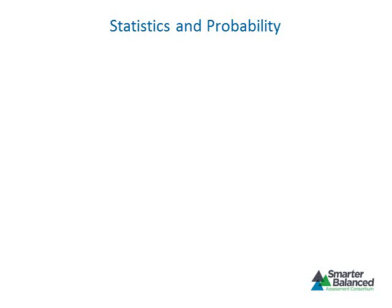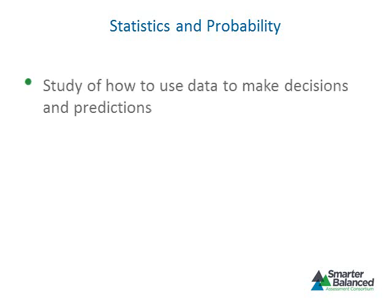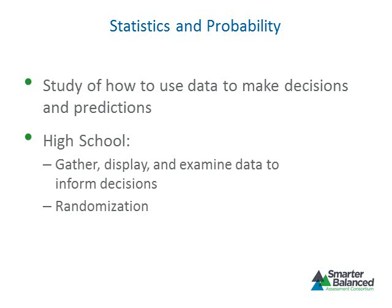The final conceptual category is statistics and probability—the study of how to use data to make decisions and predictions. Through careful study of how data is gathered, displayed, and examined, students can learn to make reasonable and accurate decisions using data. In high school, students will extend previous understandings of how to gather, display, and examine data for the purpose of making decisions. In particular, students will learn about the importance of randomization when gathering data.